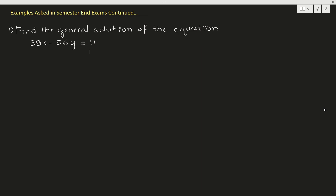Let us discuss examples on Diophantine equations. Find the general solution of the equation 39x minus 56y equal to 11. This is an example on linear Diophantine equations. Already we have those videos in my channel — if you want the basics of linear Diophantine equations, just go through them. Whenever you see this equation and they ask you to find the general solution, observe that it should be in the form ax plus by equal to c. Then we call it a linear Diophantine equation.